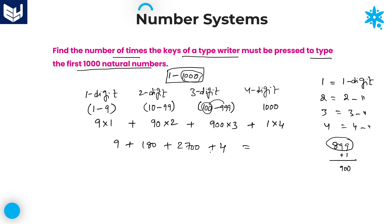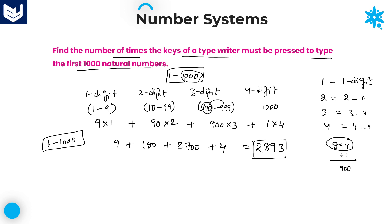Adding 9 plus 180 plus 2700 plus 4 gives 2893. So in order to type the first 1000 natural numbers, the typewriter has to press the key 2893 times. That is the required answer.